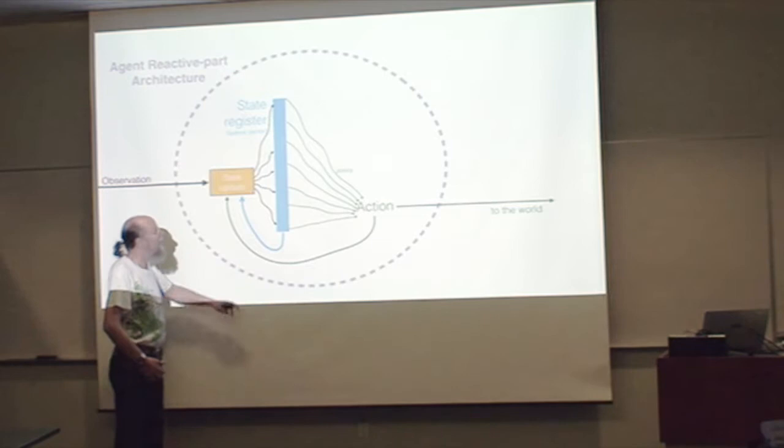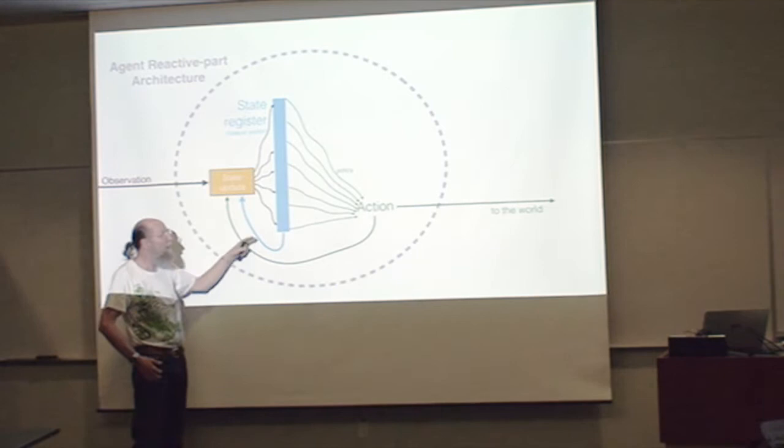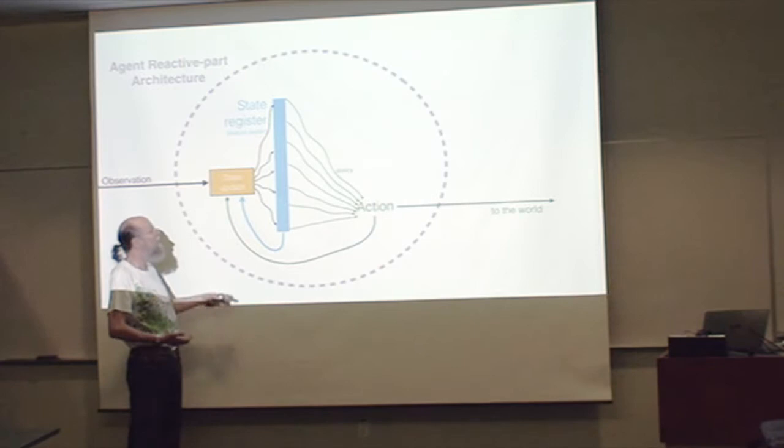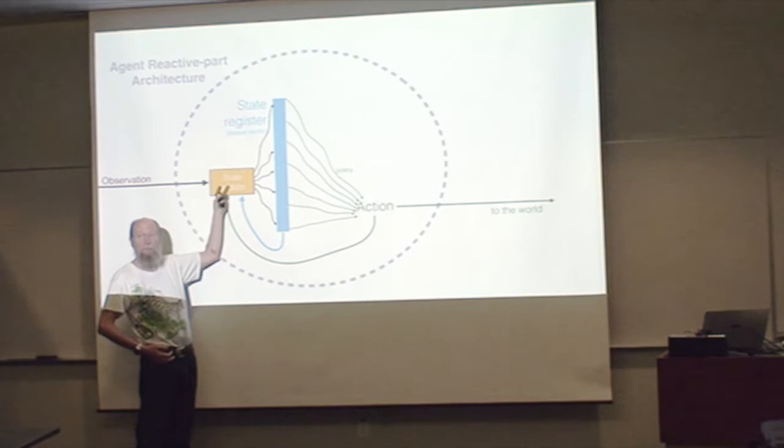The agent state has got to be based on our sensors, our observations, our data from the world. We might need to remember what our actions have been. So we've picked actions, we've seen observations, we can look at the last state register, and based on all those things, we update the state register. This is the piece I'm showing you here today.